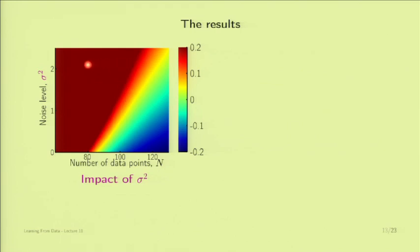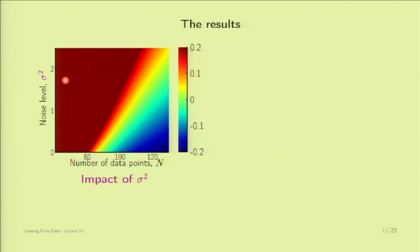This tells us overfitting worsens with sigma squared. For all targets here, I fixed target complexity at order 20 to isolate the effect of noise. The result is exactly what we expect: as you increase the number of points, overfitting goes down; as you increase the level of noise, overfitting goes up.